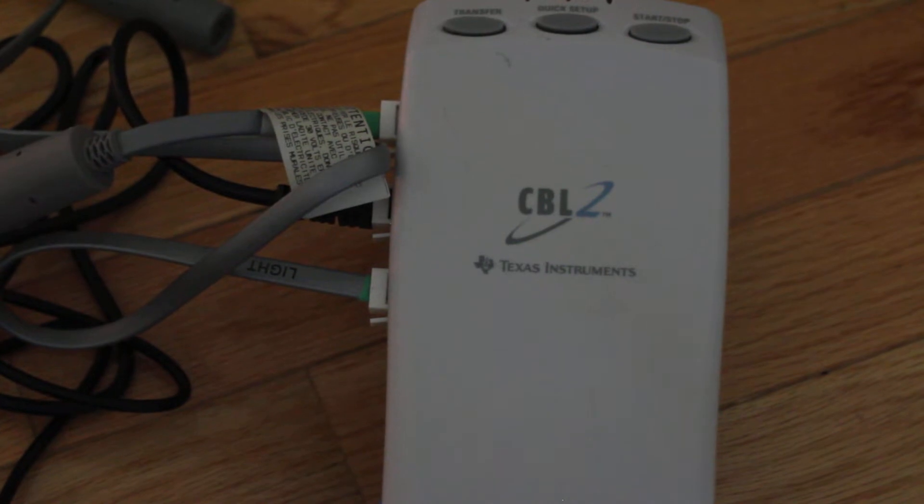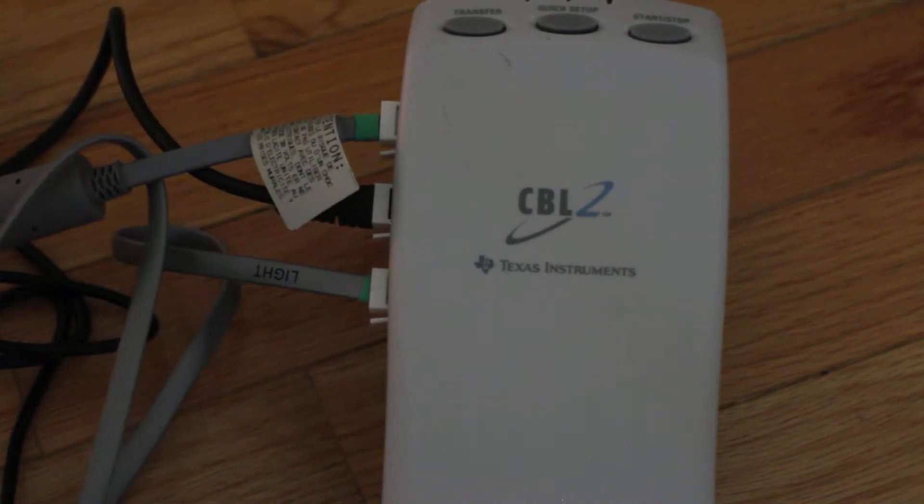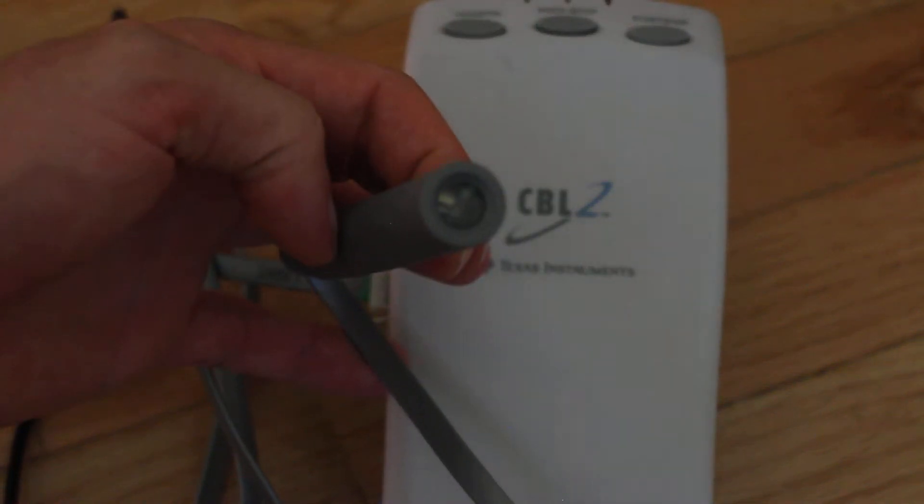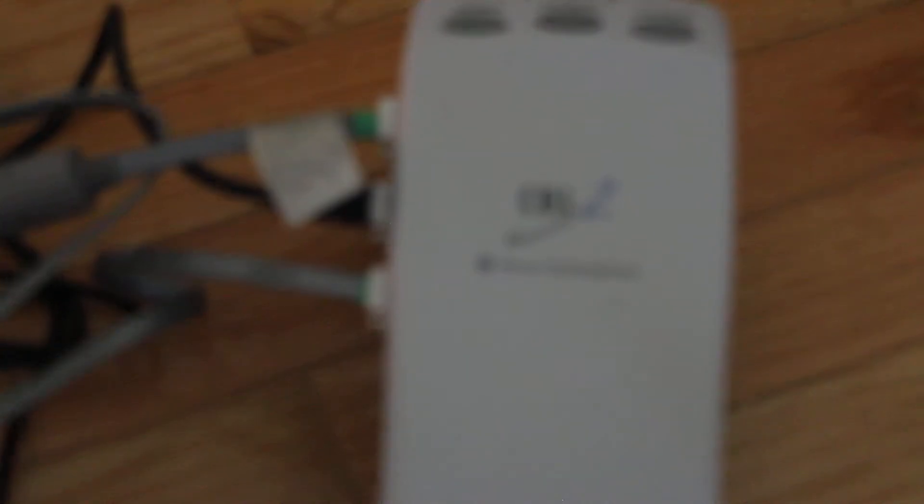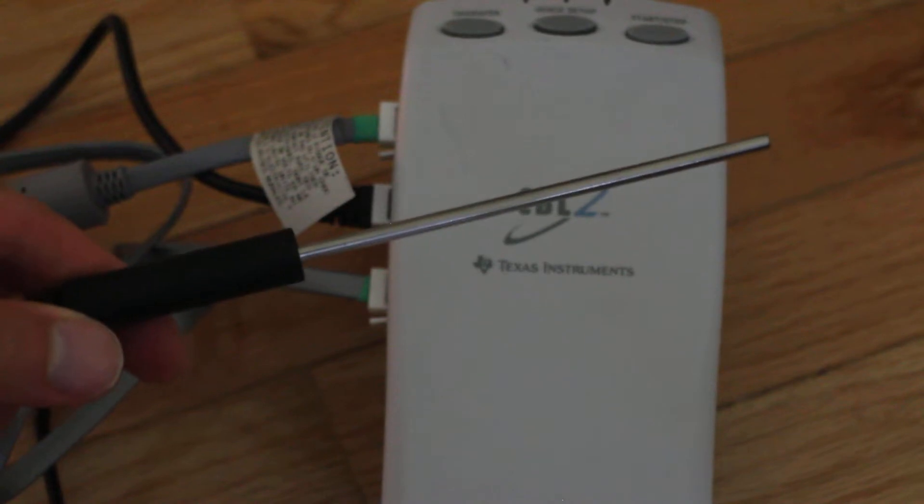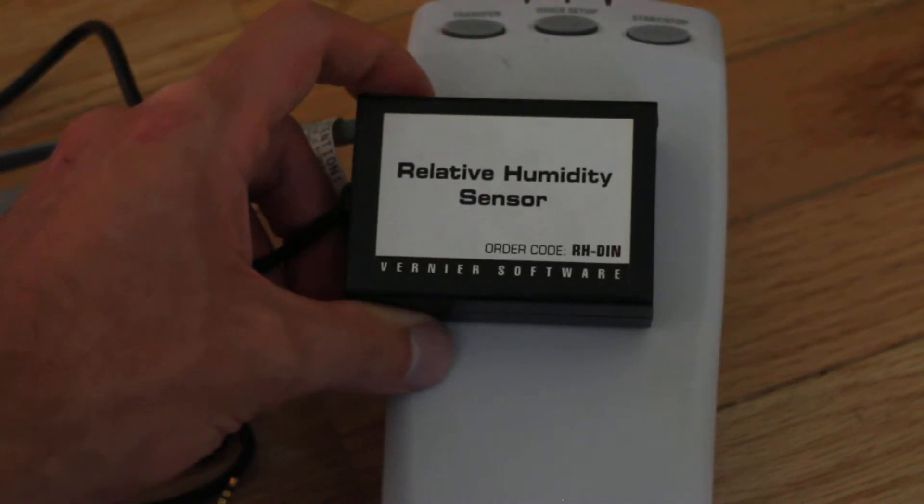The two default sensors are light. It should say it on the cable somewhere. There's your light sensor right there. Got it focused on there. Yeah, it says light on it. And then temperature, that's our temperature sensor. And a final one I got is relative humidity.